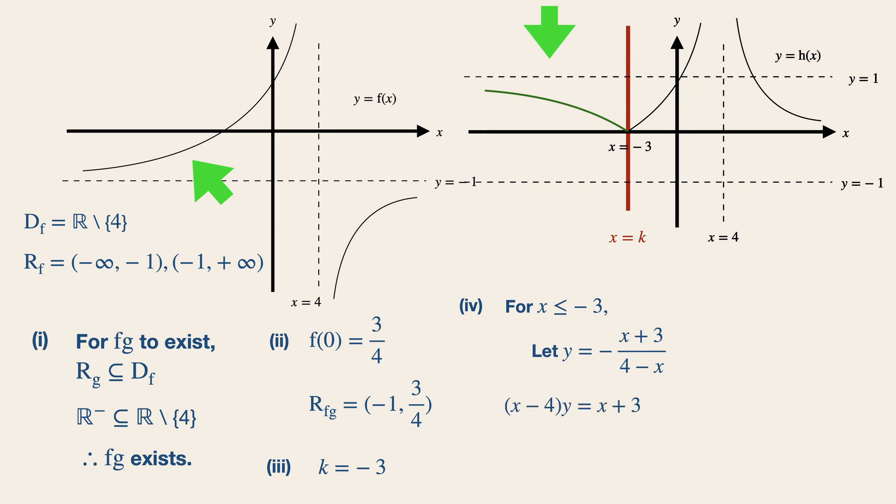From here, I'm going to multiply x minus 4 on both sides of the equation, so that I can make x the subject. So we have x times y minus 1 equals 4y plus 3, and x equals 4y plus 3 over y minus 1. So the inverse of h will then be 4x plus 3 over x minus 1.